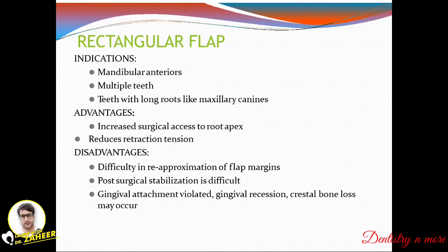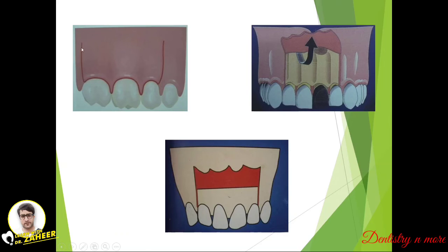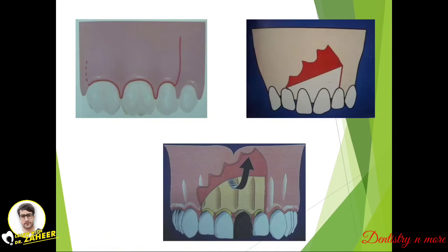The rectangular flap is indicated in mandibular anteriors and for multiple teeth or teeth with long roots like the maxillary canine. It has increased surgical access to the root apex and reduced retraction tension. However, the problems are difficulty in re-approximation, difficult post-surgical stabilization, gingival attachment is violated, chances of gingival recession, and crestal bone loss may occur. In the triangular flap, vertical incision is on one side; the rectangular flap has vertical incisions on both sides.